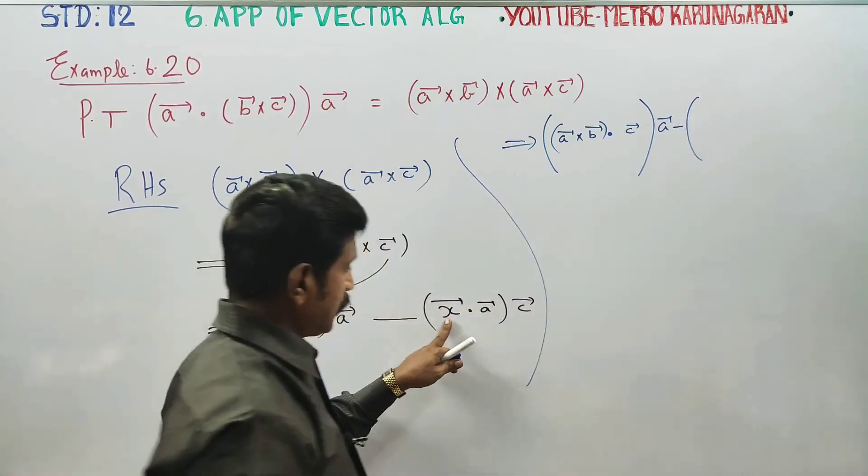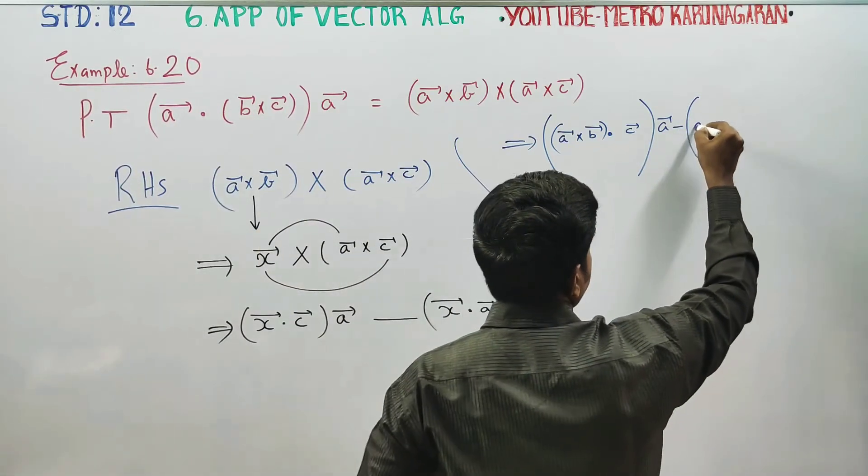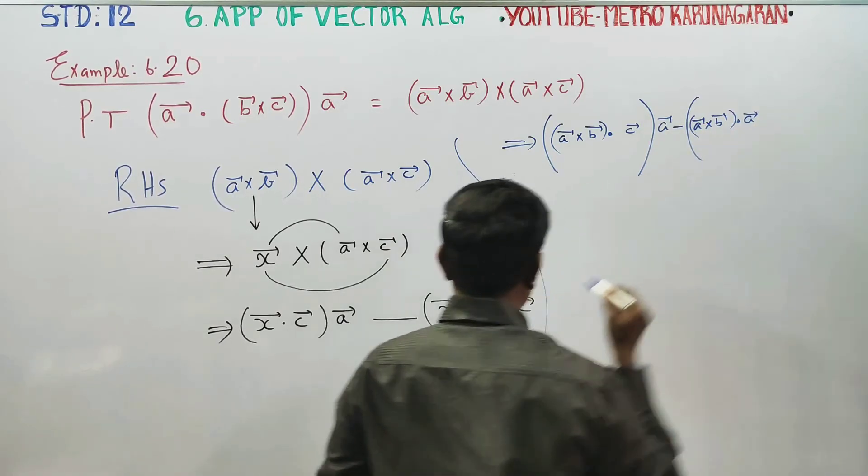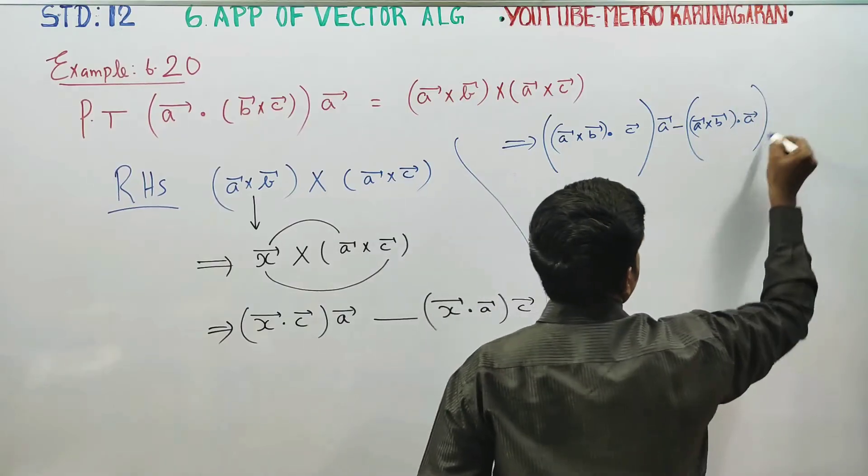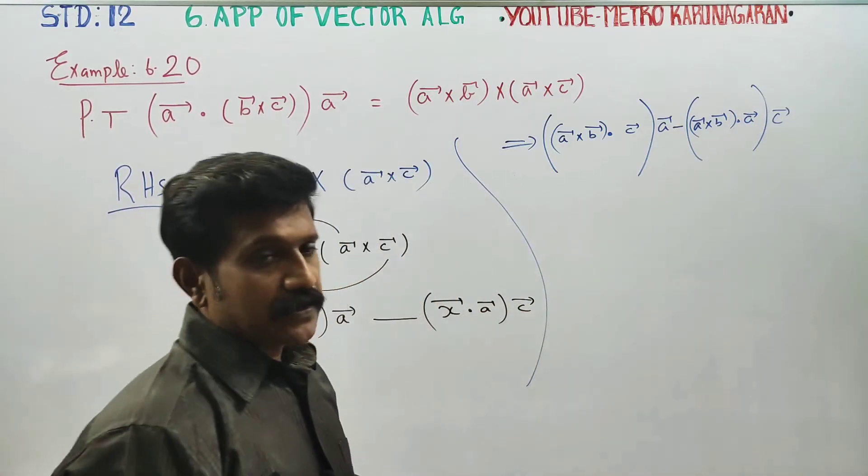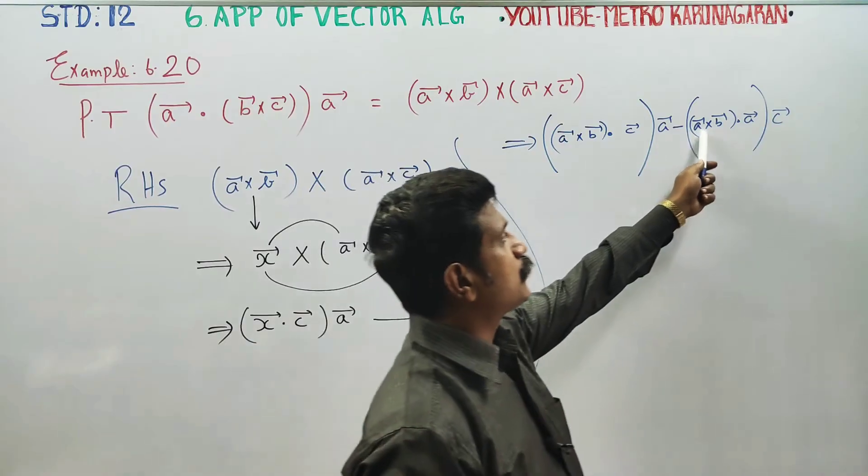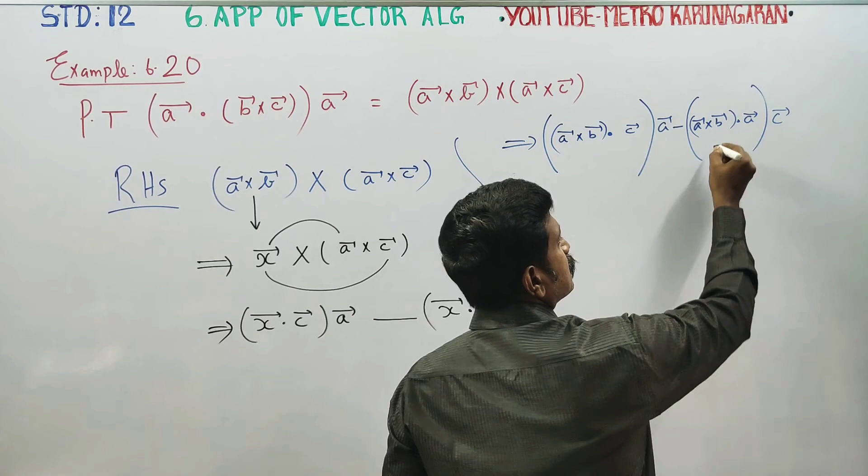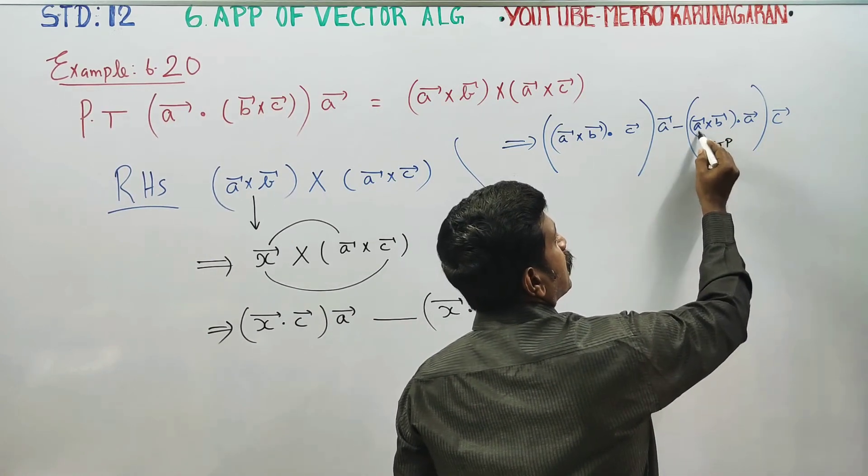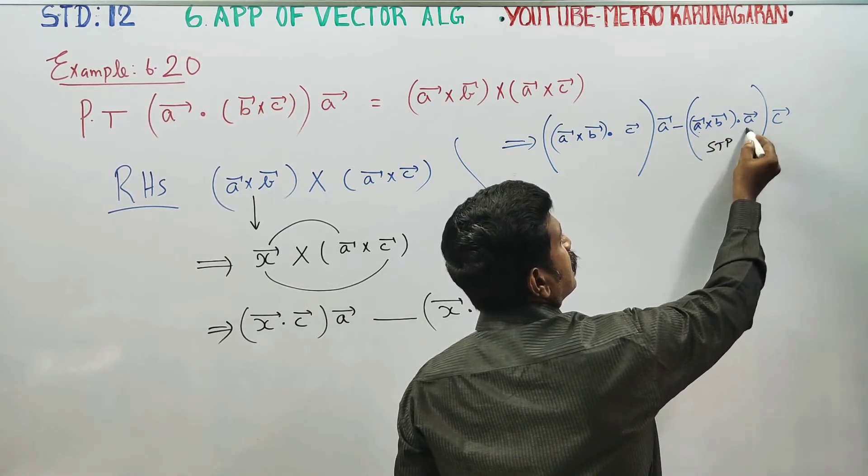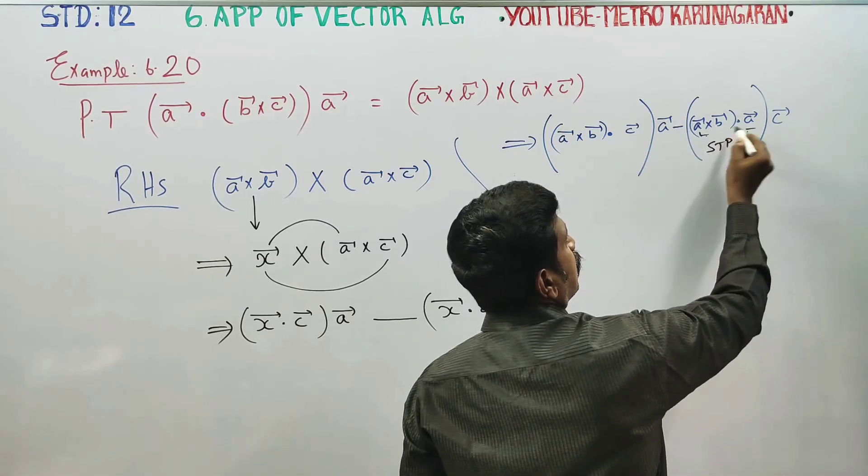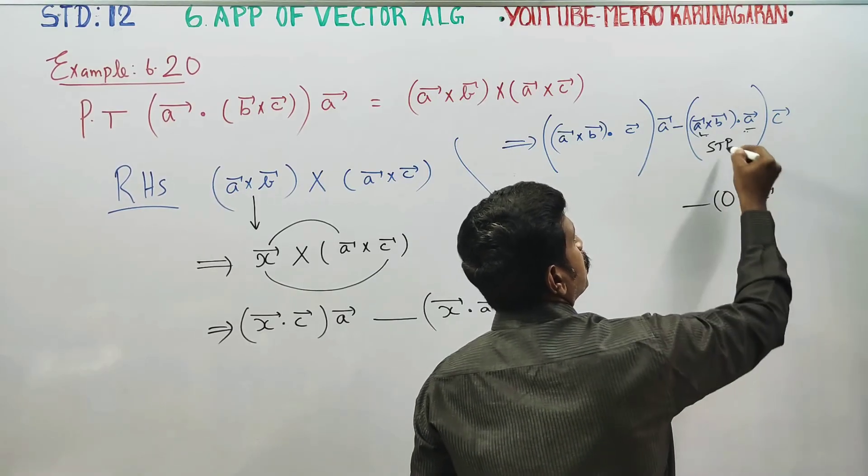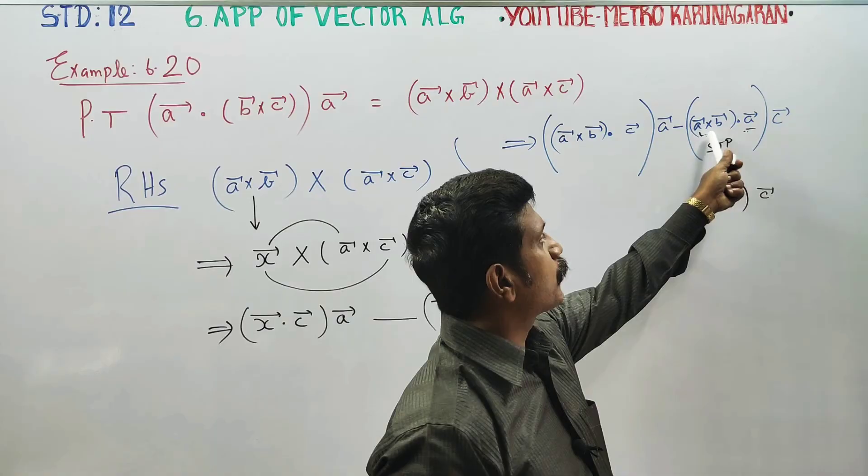Again, X is equal to A cross B, A cross B dot A, into C vector. It is called scalar triple product.